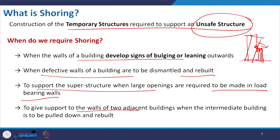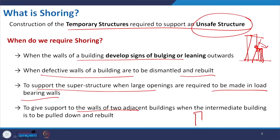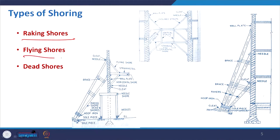Shoring also gives support to the walls of two adjacent buildings. If we have a series of buildings and need to dismantle the one in between, during the demolition process the two surrounding buildings may impact each other and fall towards each other. For that, we give some temporary support. Depending on position and purpose, shoring is divided into three parts: racking shores, flying shores, and dead shores.